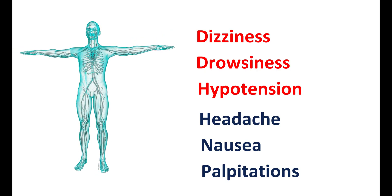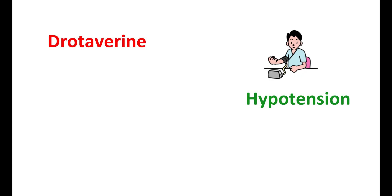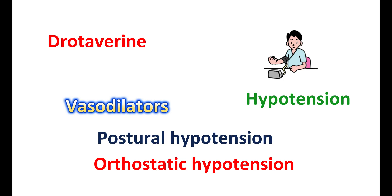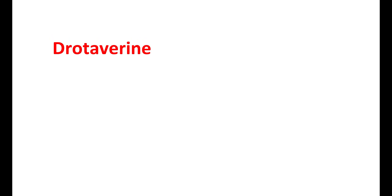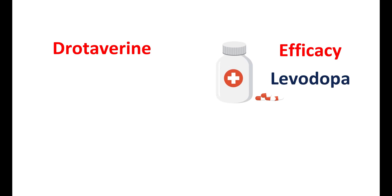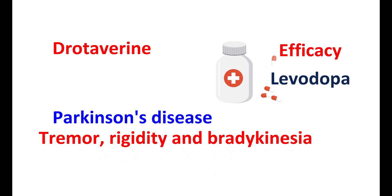Drug interactions: Since this medication produces hypotension, it should be carefully given with other medications like vasodilators. Many vasodilators can produce significant hypotension and can induce postural or orthostatic hypotension. Therefore, with such medications, drotavarine should be carefully used. A drug interaction is also observed with levodopa. Drotavarine can reduce the efficacy of levodopa, which is used in the management of Parkinson's disease to reduce tremor, rigidity and bradykinesia. When drotavarine is simultaneously used, the efficacy of levodopa can be reduced, which can worsen the symptoms of Parkinson's disease. This interaction may be due to the effect on phosphodiesterase enzyme inhibition.